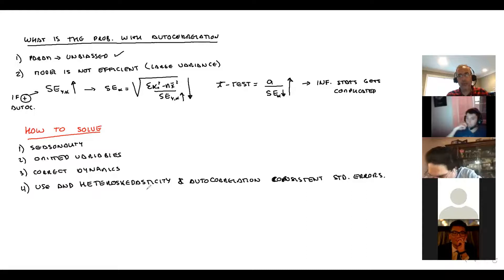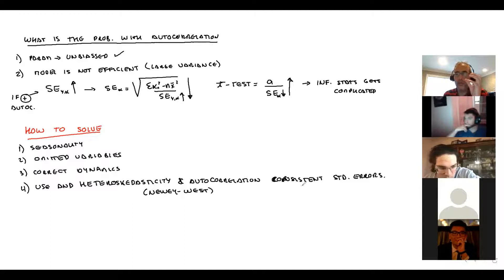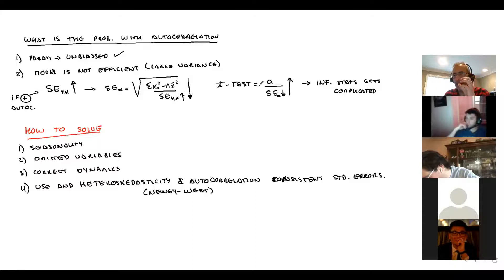The Newey-West approach adjusts only your standard errors so that your t-test, chi-square, and F-test are correctly specified and estimated. We are going to do this in EViews in one minute.